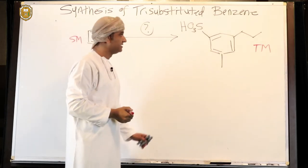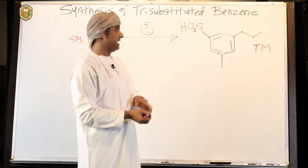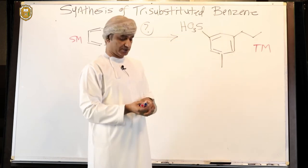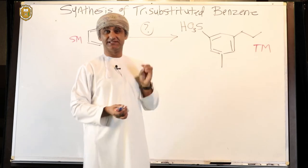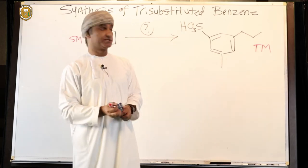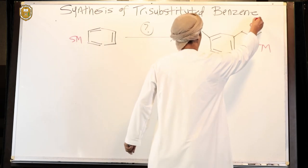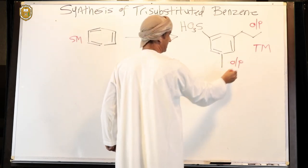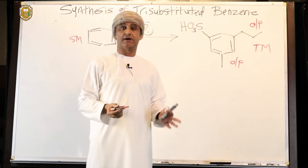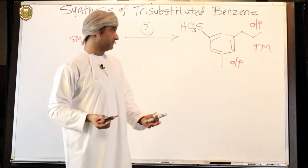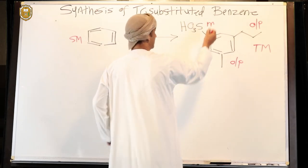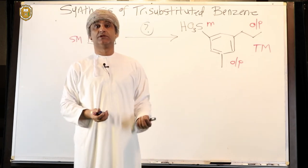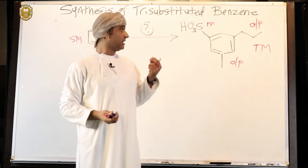What we need to look at is the substituents on the benzene ring. Here we have a propyl group, this is a methyl group, and this is a sulfonyl group. We need to check the directing ability or the orientation of each of these groups. This alkyl group is an ortho-para director. This methyl group is also an ortho-para director — alkyl groups are ortho-para directors because they are electron-donating groups by inductive effect. This sulfonyl group is a meta-director, and that's not surprising because it is an electron-withdrawing group by resonance. We proved that all electron-withdrawing groups by resonance are meta-directors.